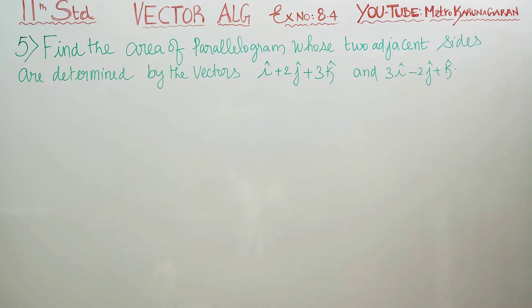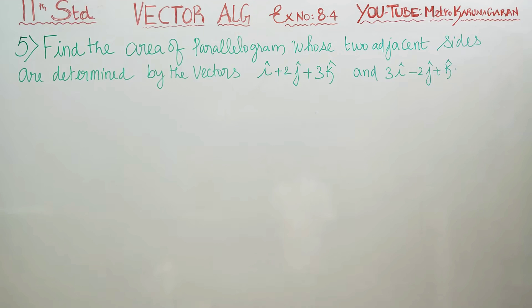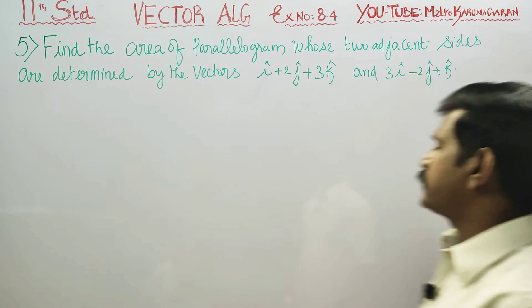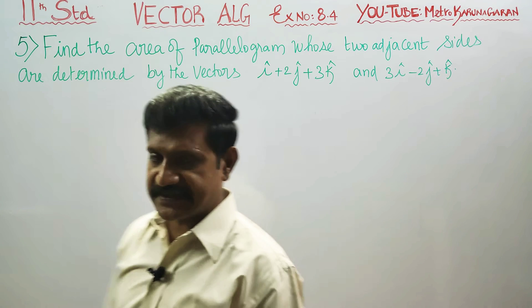Dear Leone Standard students, this is problem number 8.4, sum number 5. Find the area of the parallelogram whose two adjacent sides are determined by the vectors.